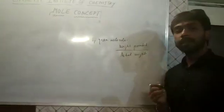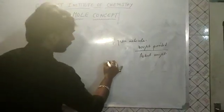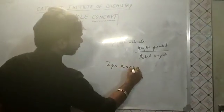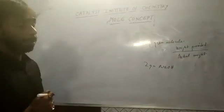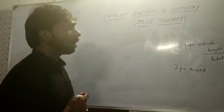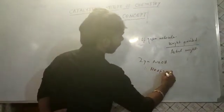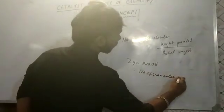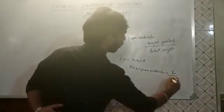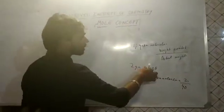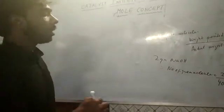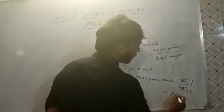For example, if you have 2 grams of NaOH and need to find the number of gram molecules: number of gram molecules = 2 divided by 40. Why 40? Because sodium hydroxide (NaOH) has a molecular weight of 40. So 2/40 = 1/20 = 0.05 gram molecules.